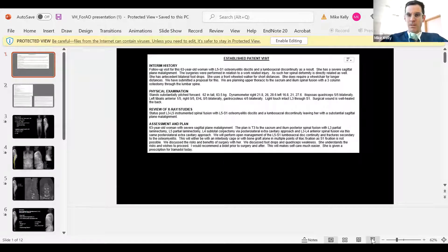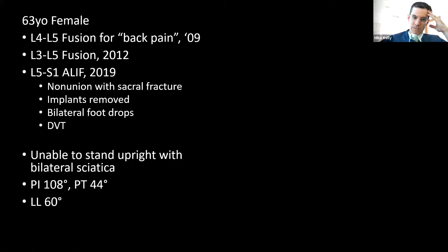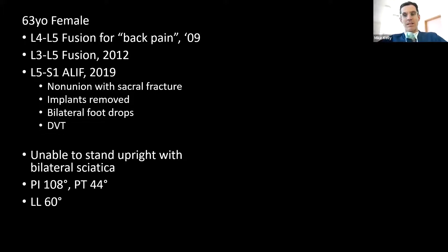Please feel free to interrupt as we go. I have a case to show, and then you can interrupt and I can give you the background and the science behind my thinking. This patient is a 63-year-old woman — and this is like the tragedy of spine surgery. She had an L4-5 fusion for back pain, then got adjacent segment disease and had an L3 to L5 fusion, then got subjacent segment disease and had an ALIF — only an ALIF, not a front-back.